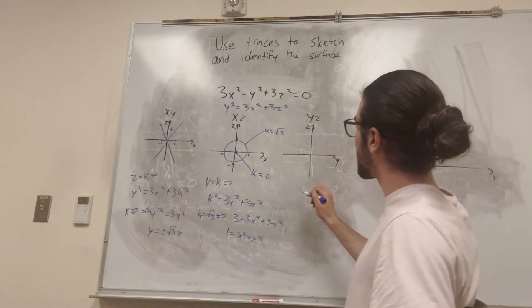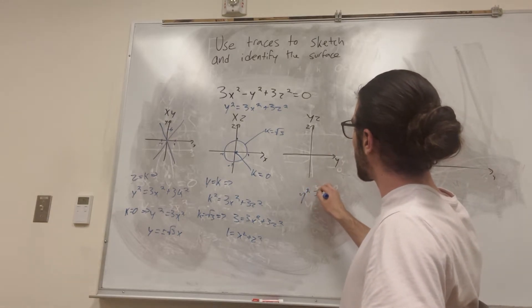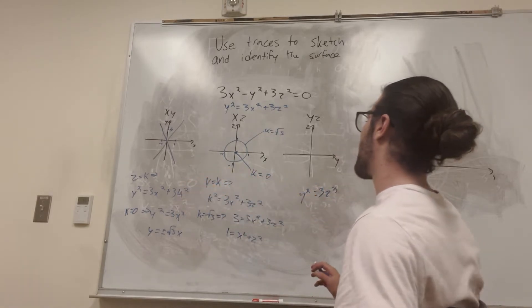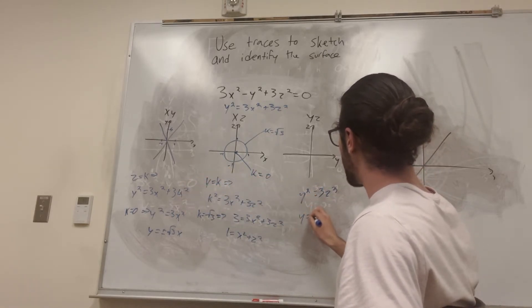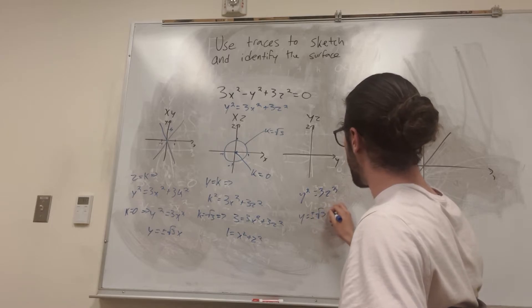All right, yz, that means x is equal to 0. So then we have y squared is equal to 3z squared. This is the same thing as we are with our yx plane. y is equal to positive or negative square root of 3z.